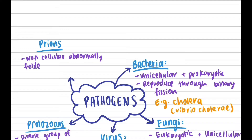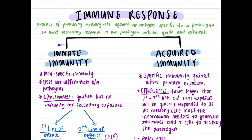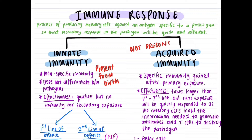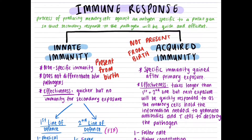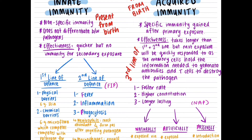An example of a prion disease is Creutzfeldt-Jakob disease. The immune response is split into two: innate immunity and acquired immunity. Innate immunity is non-specific — it does not differentiate between pathogens and is present from birth, including the first and second line of defense. Acquired immunity is specific, gained after a primary exposure, not present from birth, and includes the third line of defense.